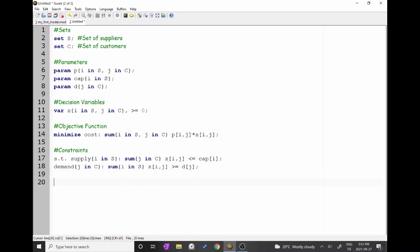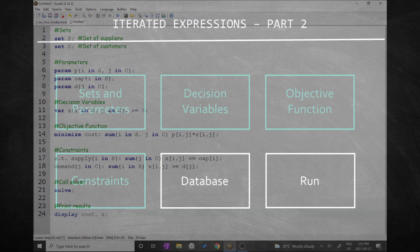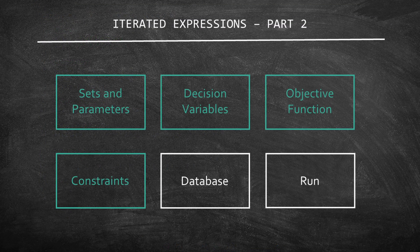Now let's ask GLPSOL to solve this model. Write solve followed by a semicolon. Also, let's print the results of the variables and the objective function. Write display cost comma x semicolon. Great, we have declared the model, but we are still missing the values of the parameters.